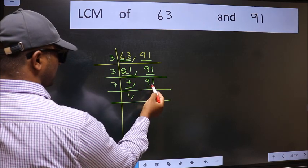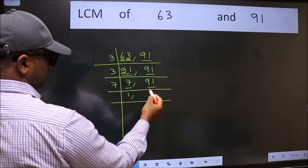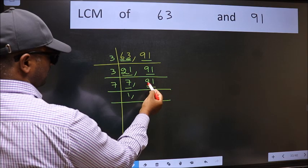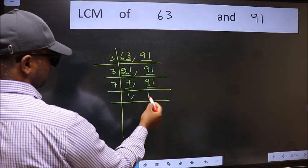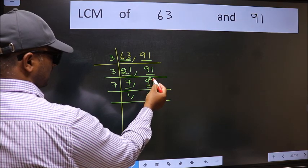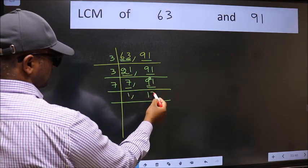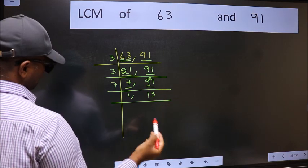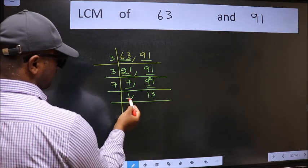The other number 91 is divisible by 7. First number 9. A number close to 9 in the 7 table is 7 times 1 is 7. 9 minus 7 is 2, 2 carried forward is 21. When do we get 21 in the 7 table? 7 times 3 is 21. Now we got 1 here.